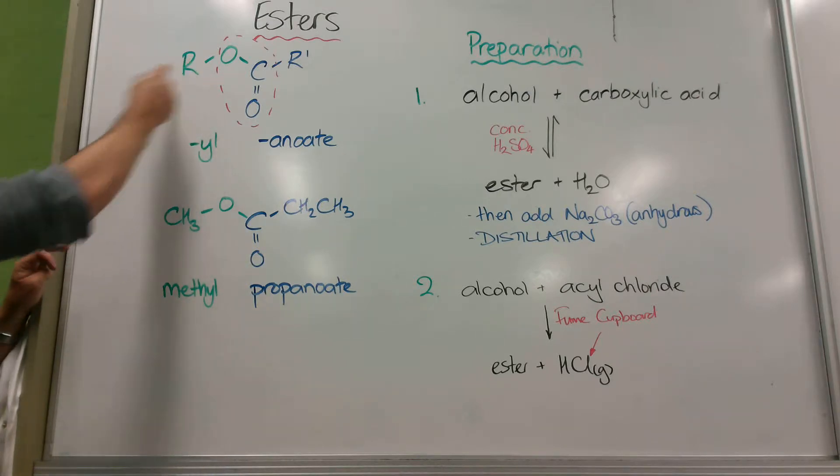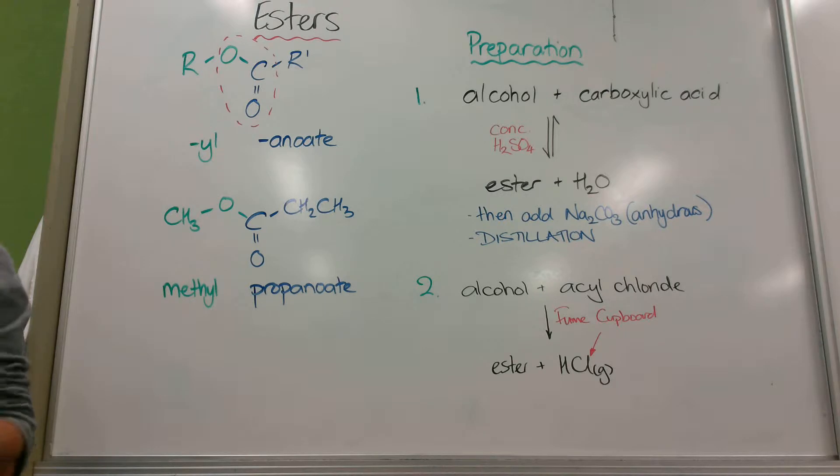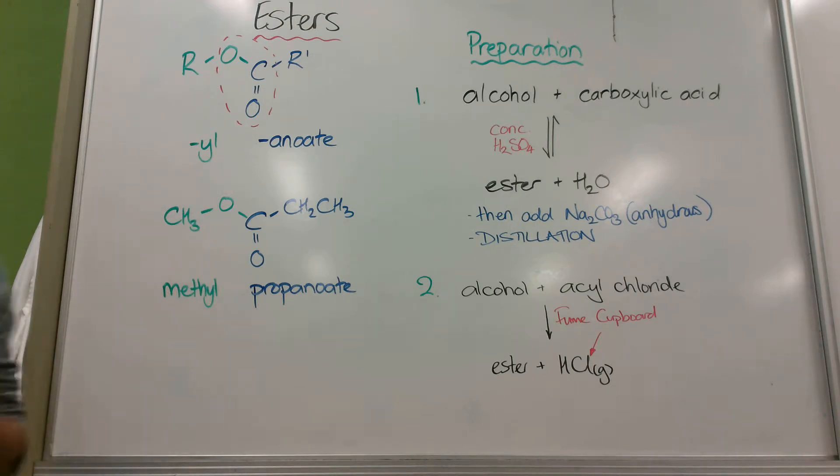Their naming represents that. We consider this carbon chain here as a side chain. We name it ending in YL. So if it had one carbon, it would be methyl. If it has two carbons bound to the oxygen, it would be ethyl. Three would be propyl and so on.